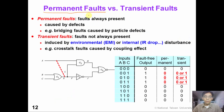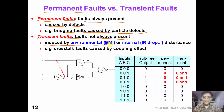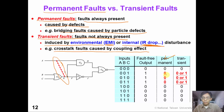Bridging fault is a permanent fault instead of a transient fault. A permanent fault means the fault is always present and is caused by a physical defect such as a particle between two wires. On the contrary, transient faults are not always present — they can be induced by environmental disturbance such as electromagnetic interference, or internal disturbance such as IR drop. For example, crosstalk faults caused by coupling effects are transient faults.